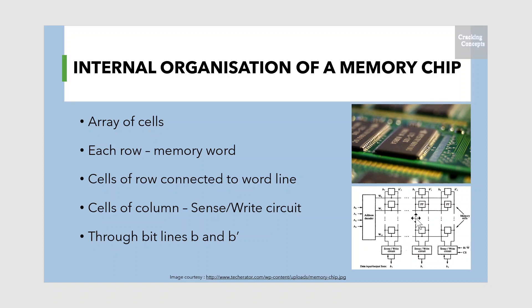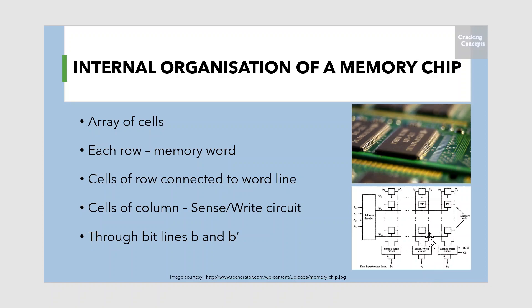The cells in each column are connected to a sense/write circuit by two bit lines, B and B'. The sense/write circuits are connected to the data input or output lines of the chip. During a read operation, these circuits sense the information stored in the cells selected by a word line and transmit this information to the output data lines. During a write operation, the sense/write circuits receive input information and store it in the cells of the selected word line.